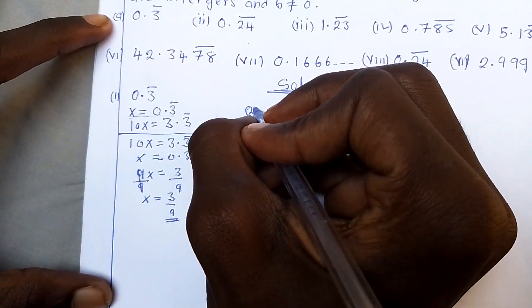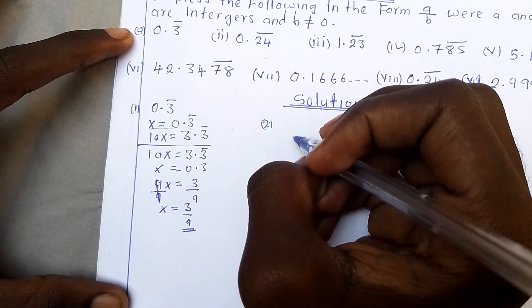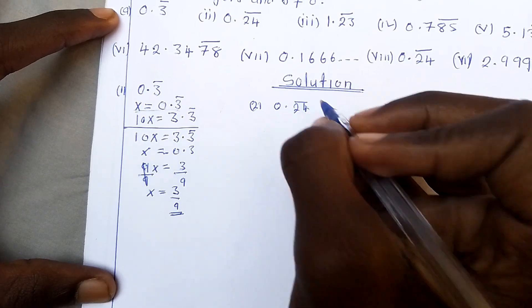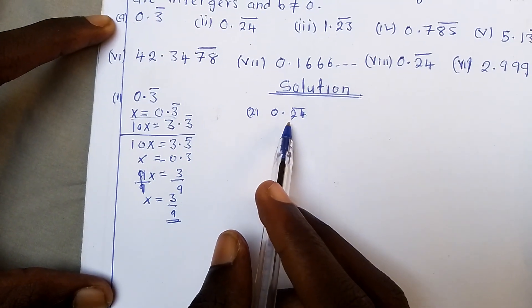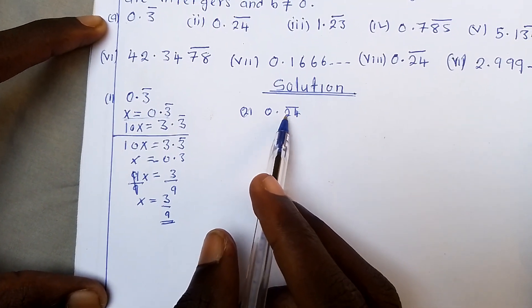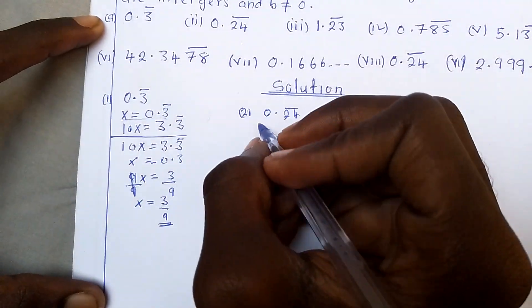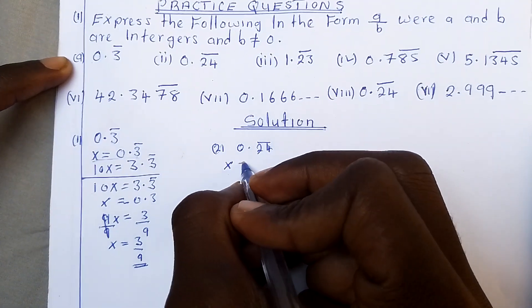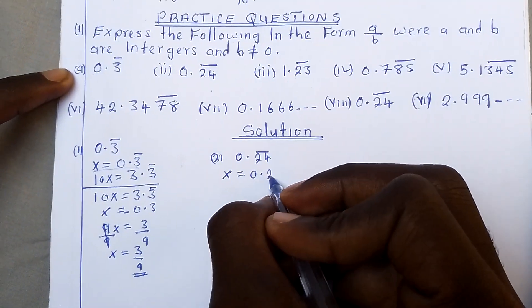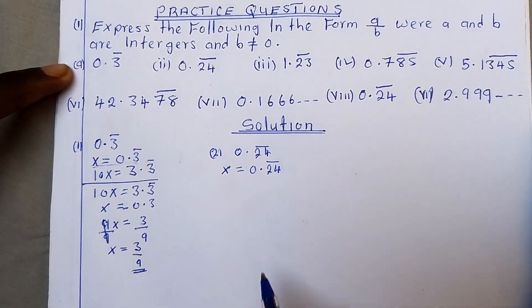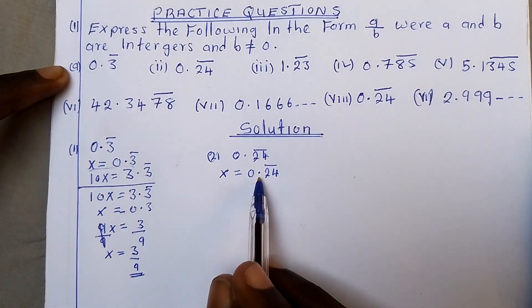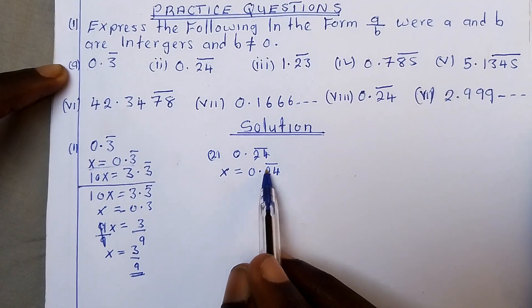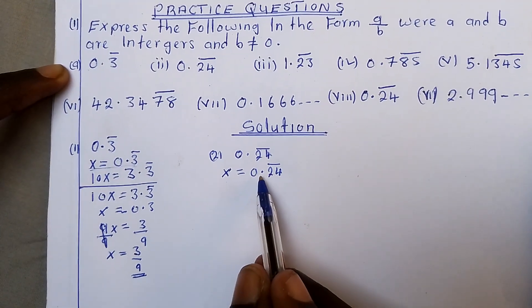We come to the second question. For this one, we have 0.24 with a bar on top, which means the numbers 24 are repeating. We use the same concept — equate this to X. So we say X equals 0.24 bar. Now we need to ask ourselves: what number can we multiply so that we make 24 a whole number? We have two decimal places, so we need a 1 with two zeros.